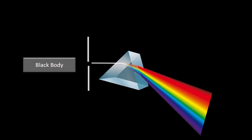Now let's understand Wien's Displacement Law with the help of a simple and interesting activity. Let's say I have a black body and I'm increasing the temperature of this black body. It will start emitting some radiation — let's say it is emitting white light. Now, if I pass this white light onto a prism, dispersion will happen and this white light would split into multiple colors.